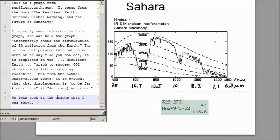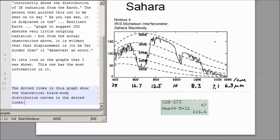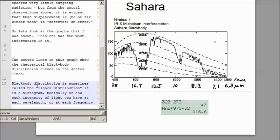Okay, so let's look at the graphs that I was actually shown. This one has the most information in it. The dotted lines in this graph show the theoretical blackbody distribution curves.